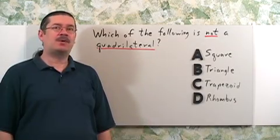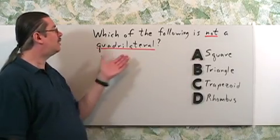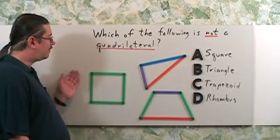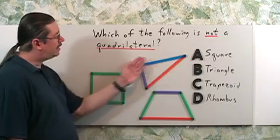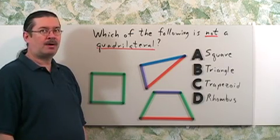To answer this question, I think it's a good idea to draw each of these figures, and then see which one is not quadrilateral. Well, here's a picture of our square. Here's a triangle. Here's a trapezoid. What about a rhombus?